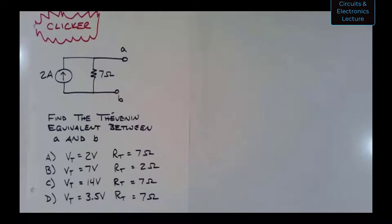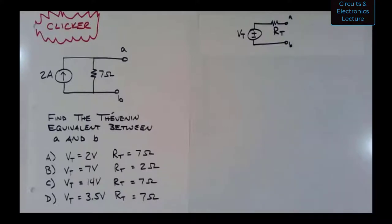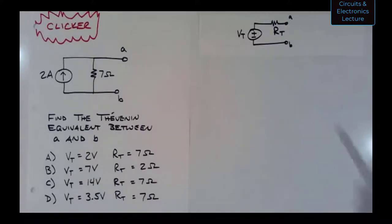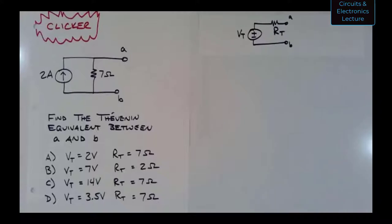Step one is to create a schematic representing the Thevenin equivalent, shown at the upper right. Remember, the Thevenin voltage is the open circuit voltage between A and B — you don't connect anything to the circuit, you just calculate the voltage between A and B as it is. For the Thevenin resistance, if you have no dependent sources and only independent sources, you can zero out the source and then find the resistance between A and B.